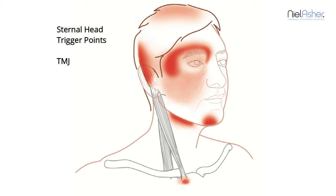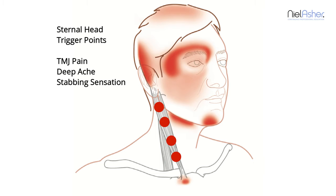This pain may masquerade as TMJ pain. The nature of the pain is usually a deep ache, but sometimes there is a stabbing component, so it may mimic the pain of trigeminal neuralgia. It's important that if a diagnosis of trigeminal neuralgia is made, your doctor actually checks these trigger points, because they may in fact be the cause and not irritation of the trigeminal nerve.